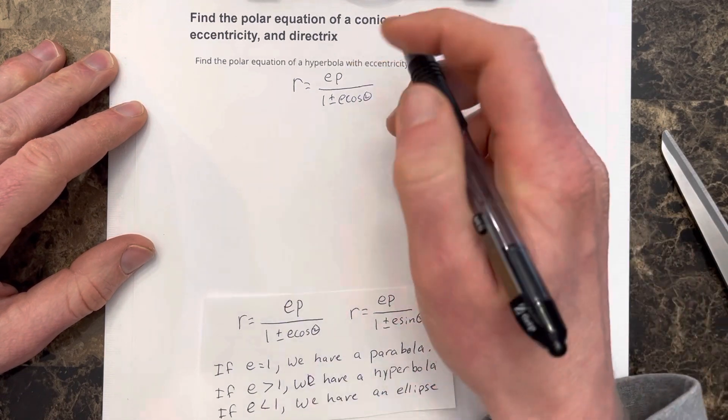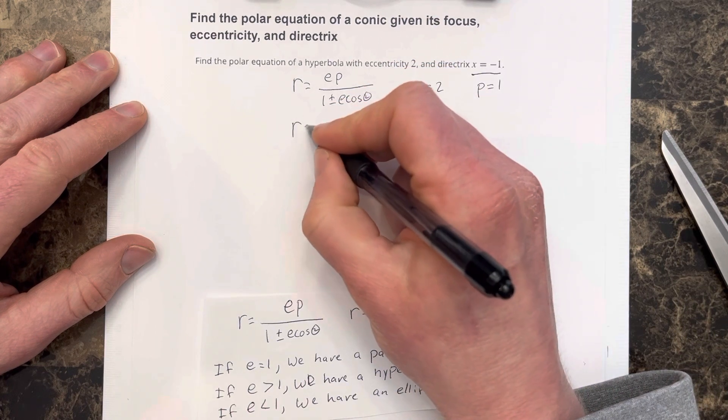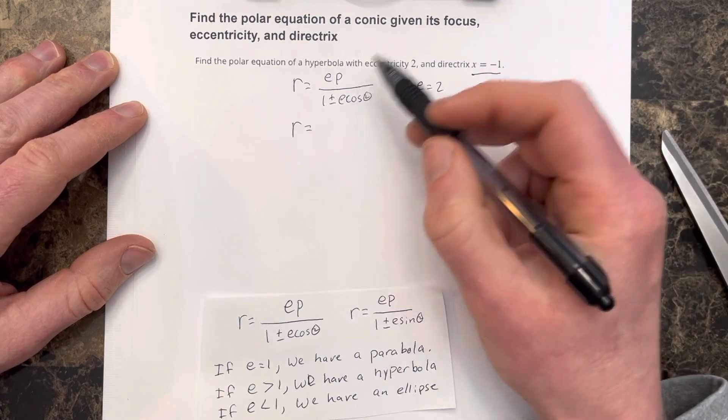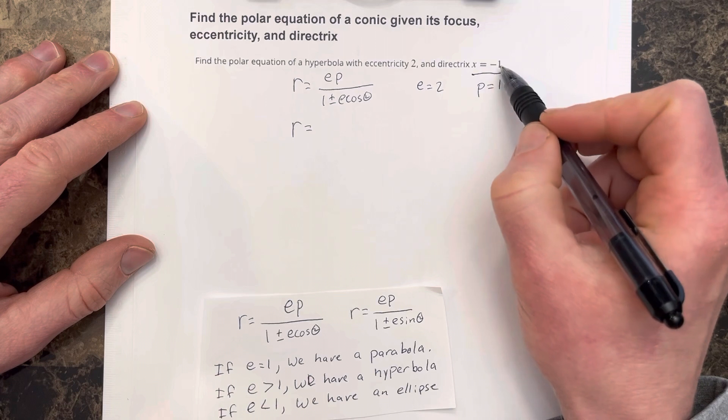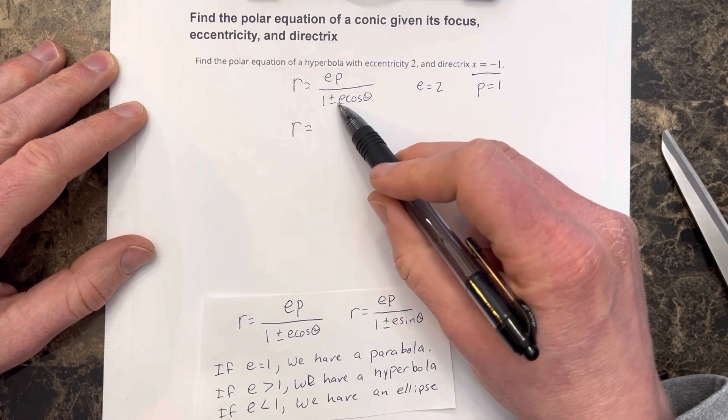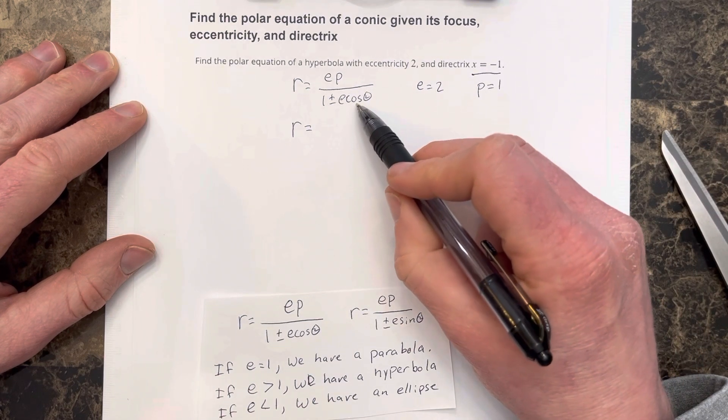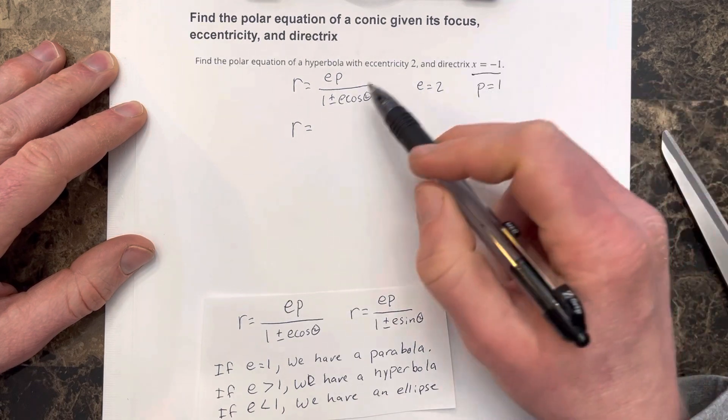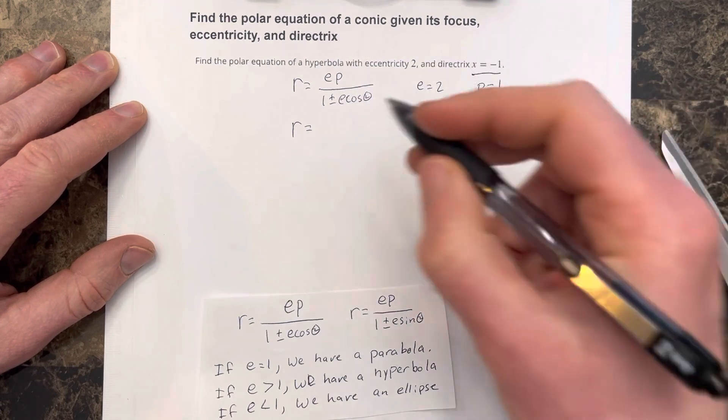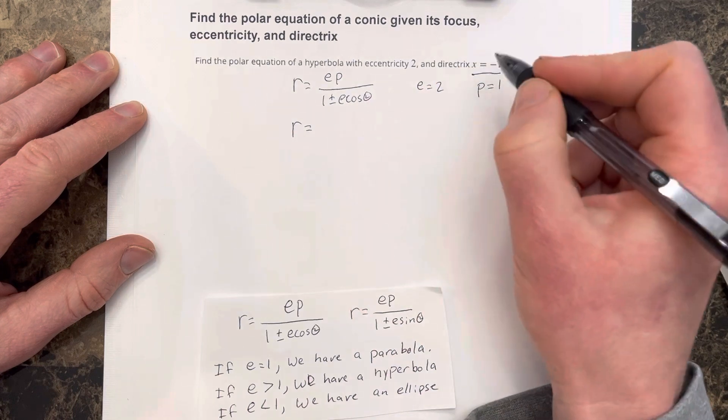So I can now use those two pieces and say that we have r is equal to, and also because the directrix is to the left of the pole, we're going to be using the minus e cosine theta piece instead of that positive e cosine theta piece. If it was to the right of the pole, we would use positive e cosine theta.